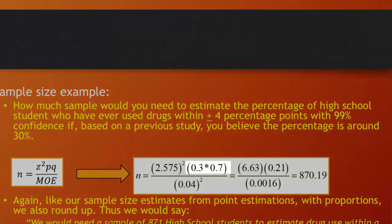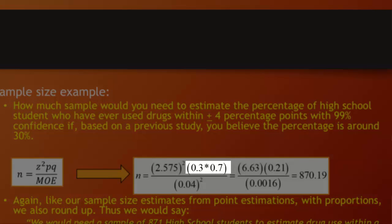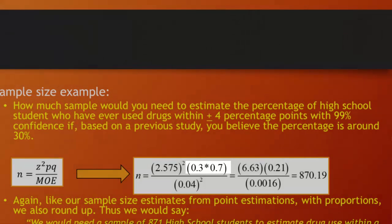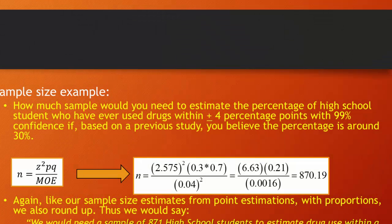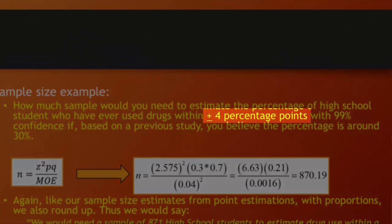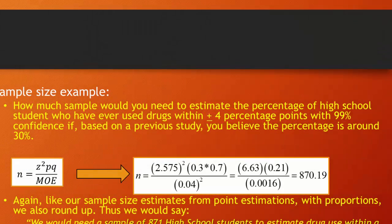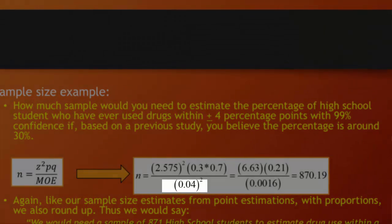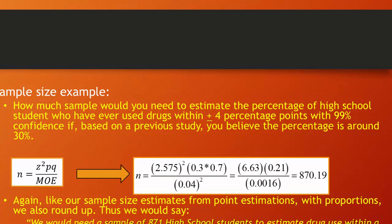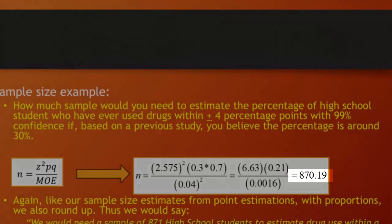Now, that also gives us q because we know that q is 1 minus p and 1 minus 0.3 is 0.7. So, therefore, p is 0.3 and q is 0.7. Finally, we also said plus or minus 4 percentage points. That's our margin of error. When our margin of error is 4 percentage points, we're saying p is 0.04. So, now we just solve the formula. And you can see that all works out to 870.19.